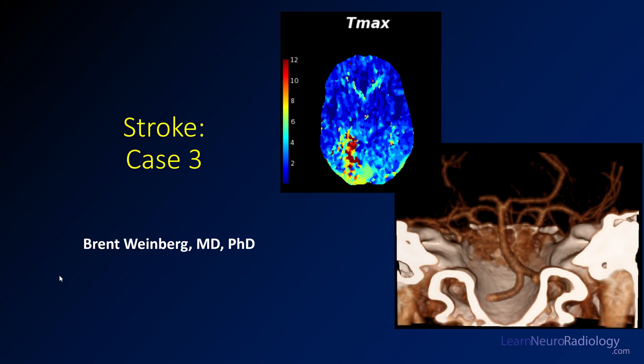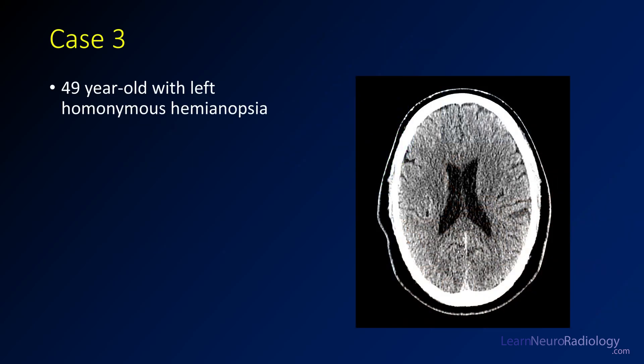Hi everyone, I'm Brent Weinberg from Learner Radiology. I'm here to show you stroke case number three from our stroke imaging series. So let's just go ahead and dive right in. Our case number three is a 49-year-old with left homonymous hemianopsia.